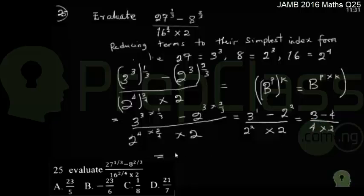That gives me minus 1 all over 8. Scanning through the options, the correct answer is minus 1 over 8.